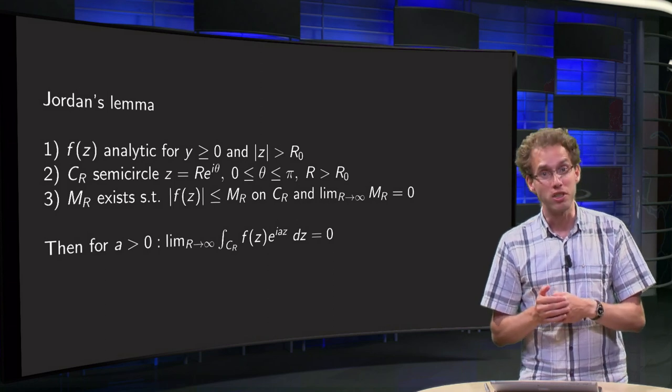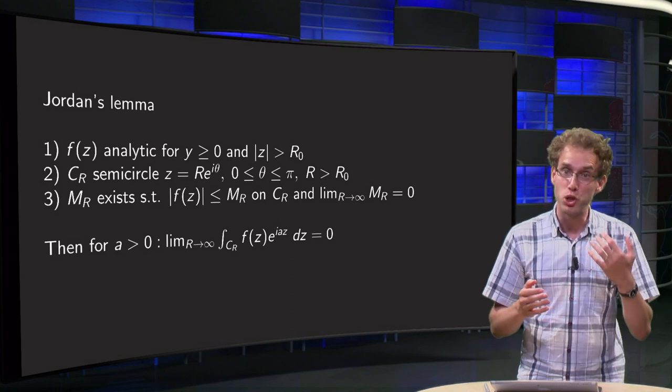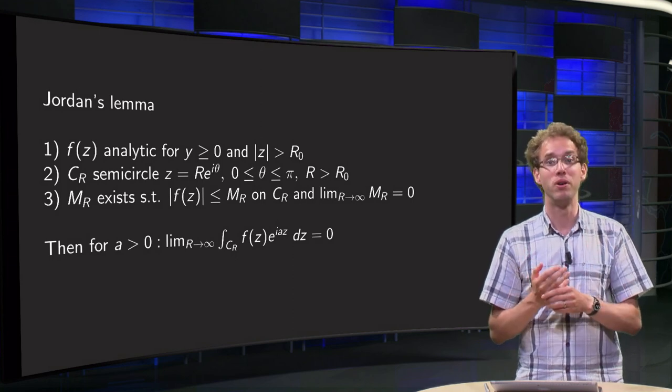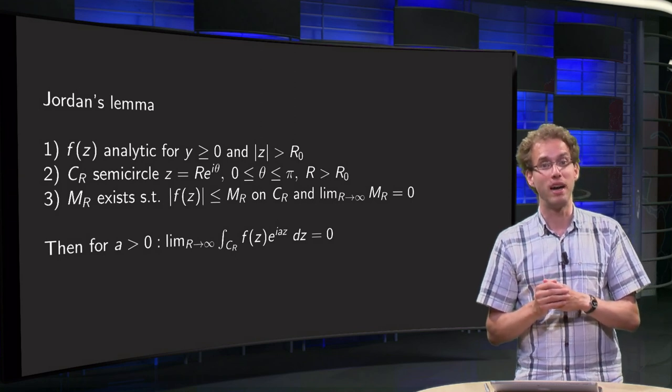Fortunately, we have Jordan's lemma for those cases, which tells us that it is already enough if f goes to zero. So that is more powerful than an ML estimate. Let us look at this lemma in this video.